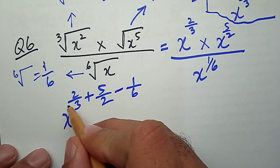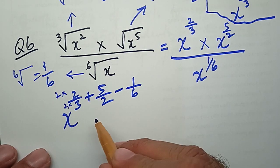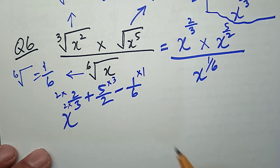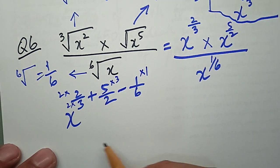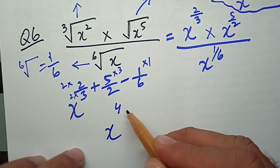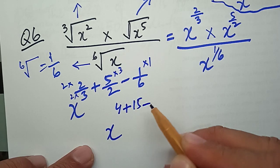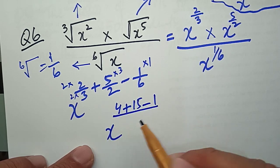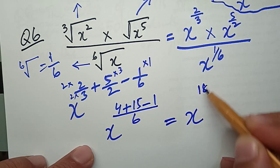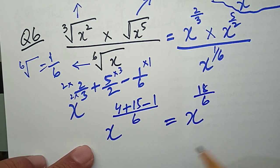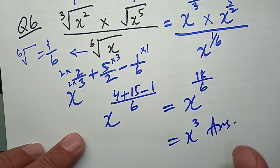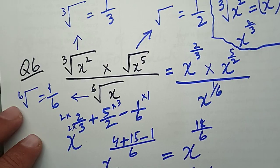To solve these fractions, I will multiply the first fraction by 2, the second by 3, and the last by 1. So: 2 times 2 is 4, plus 5 times 3 is 15, minus 1 times 1 is 1, all divided by 6. X equals 18 divided by 6, which gives X power 3. This is the answer to question number 6.